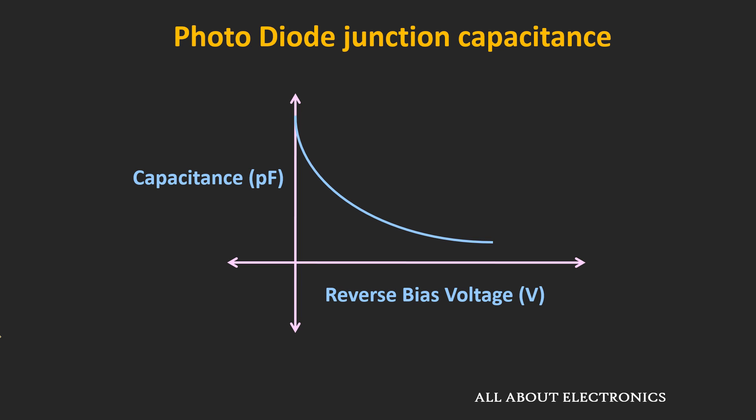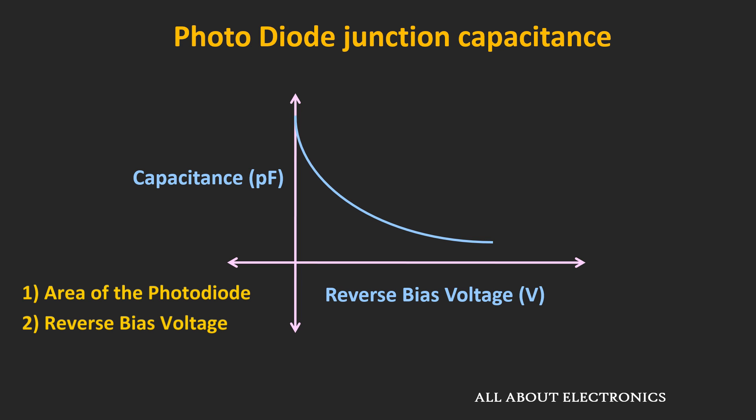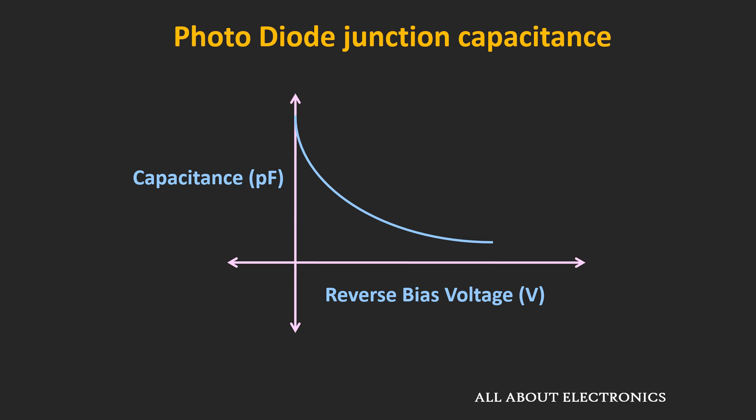The RC time constant depends on R, the equivalent resistance of the photodiode and load resistor, and C, the equivalent capacitance of the photodiode. The photodiode junction capacitance depends on the area of the photodiode and the applied reverse bias voltage. As the area of the photodiode increases, the response time increases because the capacitance also increases. That is why large area photodiodes are slower compared to small area photodiodes. For fast switching applications, one should select small area photodiodes.